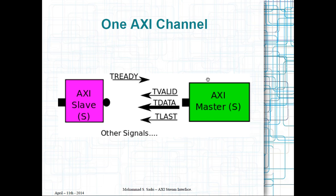If you have one AXI master stream component and one AXI slave stream component, there exists a set of specific signals between these two components in your RTL. Here are the most important signals: from the AXI slave to the AXI master we have T_ready, meaning the slave is saying 'I am ready, you can send the data.' From the AXI master to the slave we have T_valid, meaning that when T_valid is high the data on that clock cycle is valid and the slave can grab it. And whenever T_last is active, it means this is the end of the frame or packet, and a new packet is about to begin.